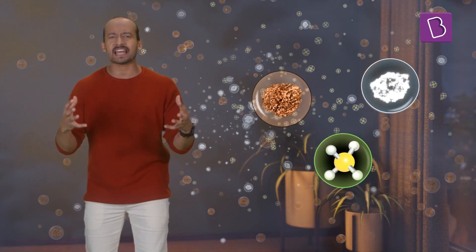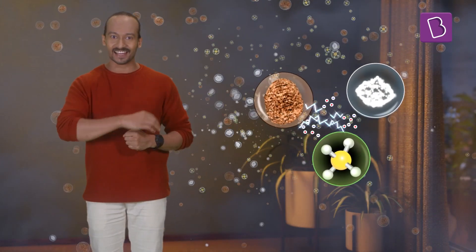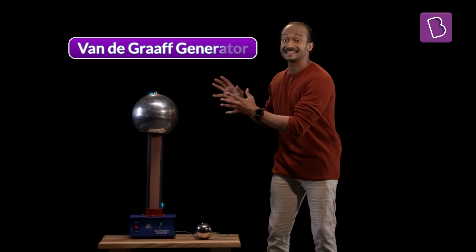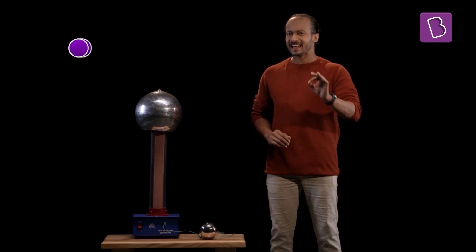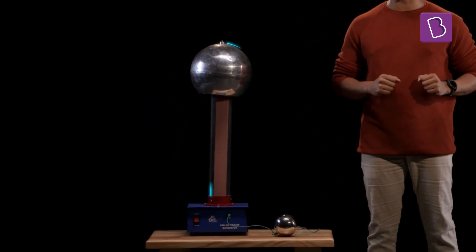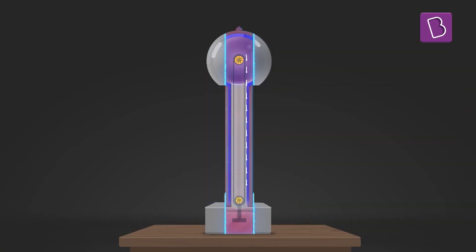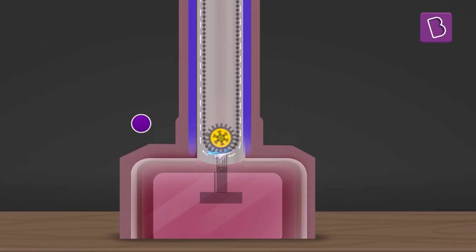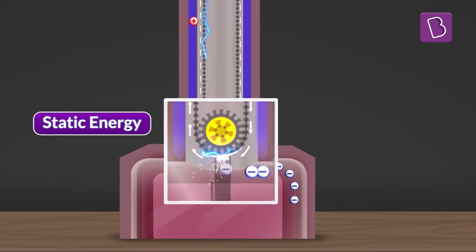Show them your shock machine. Oh yeah, my Van de Graaff generator. This ball of static charges is very similar to clouds during storms. When switched on, it creates friction within and builds up static charges.